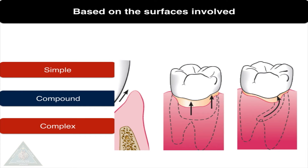Pockets can also be classified based on the surfaces involved as simple, compound, and complex. In a simple pocket, only one surface around the tooth is involved. In a compound pocket, more than one surface can be involved. A complex pocket is a spiral pocket where infection from one side can spread to the other side through the furcation area, common in multi-rooted teeth. The significance is that patients can develop a periodontal abscess in this type of pocket.